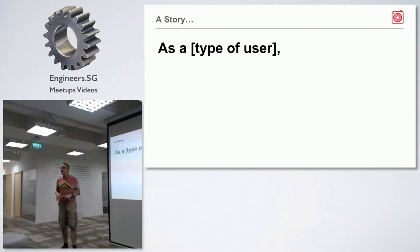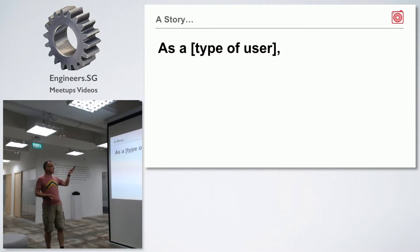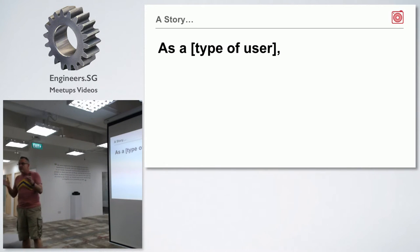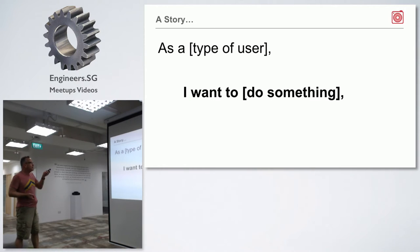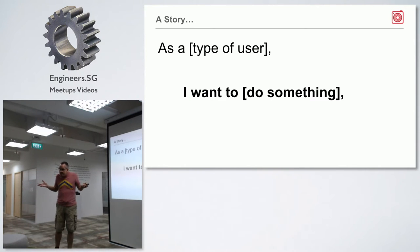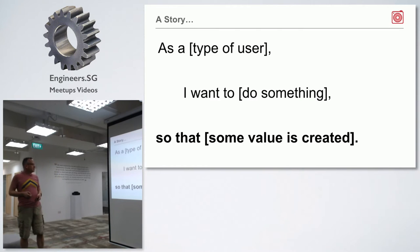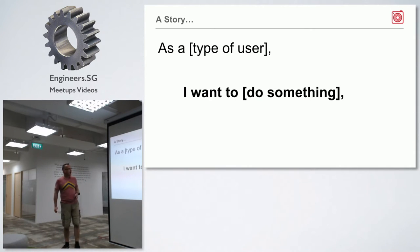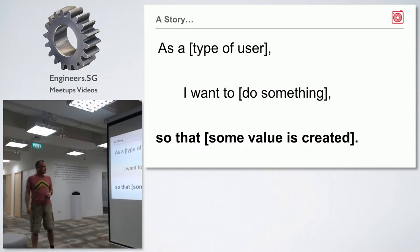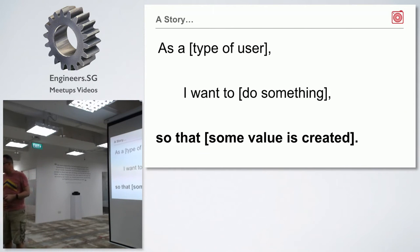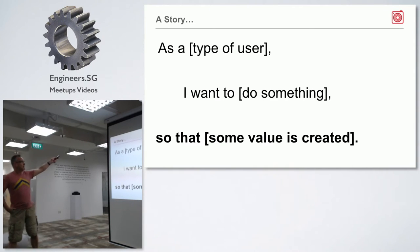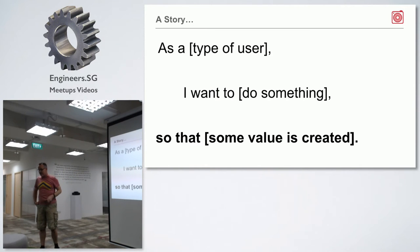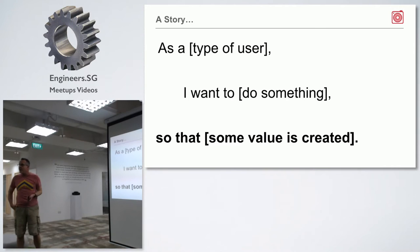A story has a very simple structure. There are three clauses: 'As a type of user,' 'I want to do something,' 'so that some value is created.' That is the heart of what you're doing as a software engineer, as a product team — figuring out how to create value for someone.